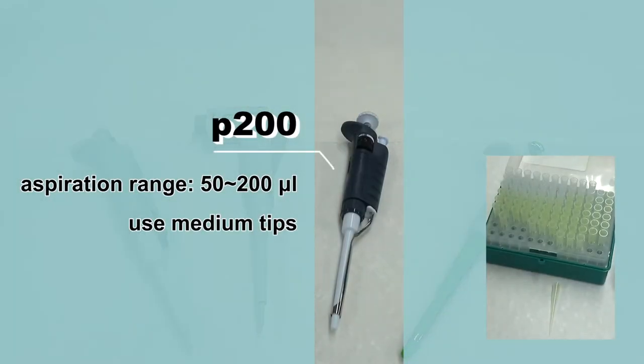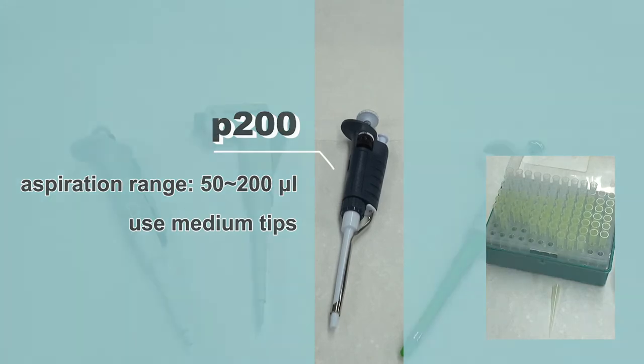The P200 has an aspiration range of 50 to 200 microliters and also uses medium tips.